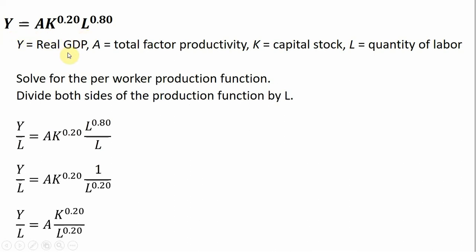Y is real GDP. A is total factor productivity. K is the capital stock. L is the quantity of labor.